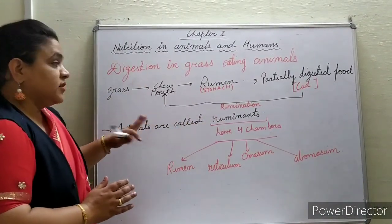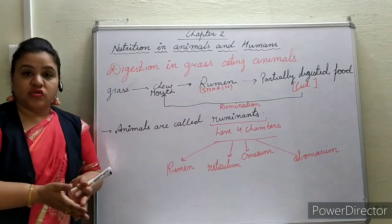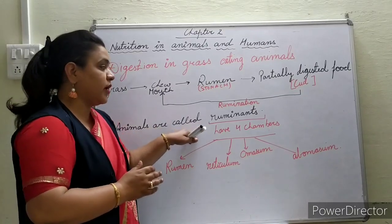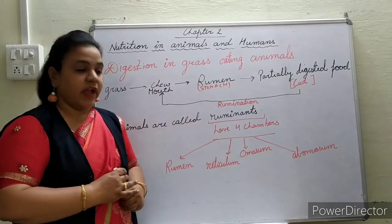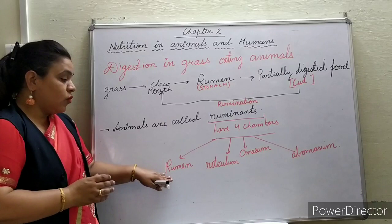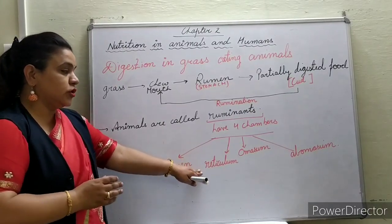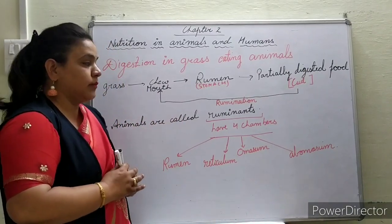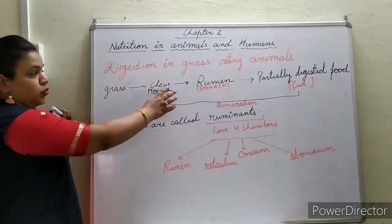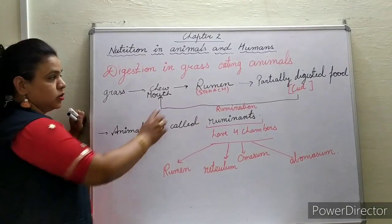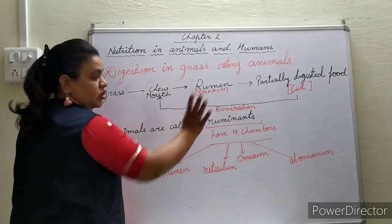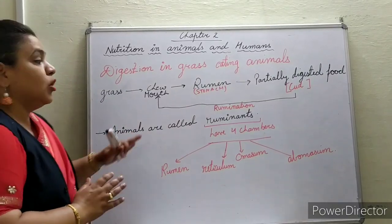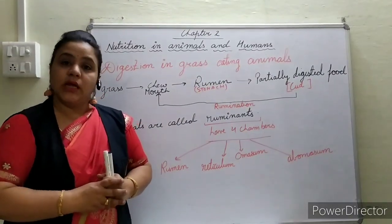If we look at the stomach structure of ruminants, the stomach is divided into four chambers: first is the rumen, second is the reticulum, third is the omasum, and the fourth part is the abomasum. We will be understanding the next topic — digestion of cellulose — in the next video.